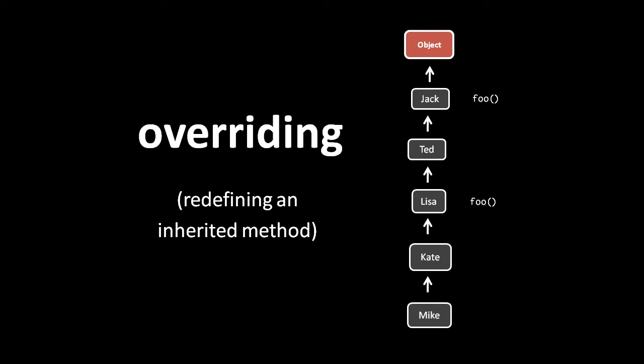To override in object-oriented programming means to redefine an inherited method. If the Jack class is defined to have a method named foo, then all of its descendants will have that method as well. However, if in the Lisa class we define a method also named foo, then Lisa will have that foo instead of the one inherited from Jack — and Kate and Mike will inherit the foo of Lisa, not the foo of Jack. The utility of this is that a subtype does all the same things as its ancestors, but may need to do a thing in its own specific way. Like in a real-world situation where a cat is a kind of mammal and all mammals eat — we might override the method eat in the cat class because a cat eats in its own particular way.